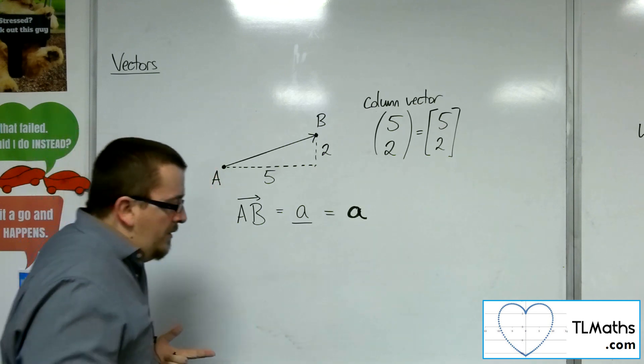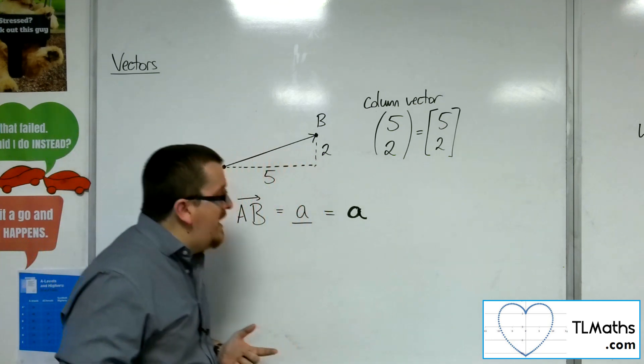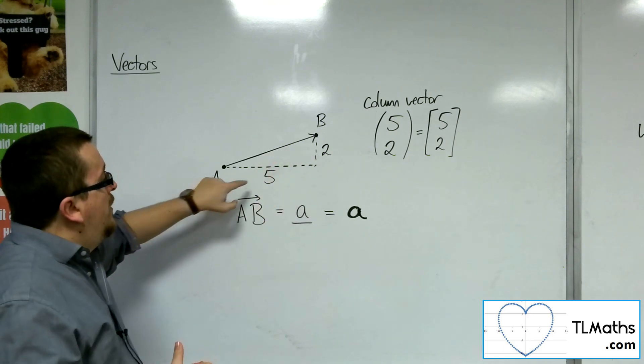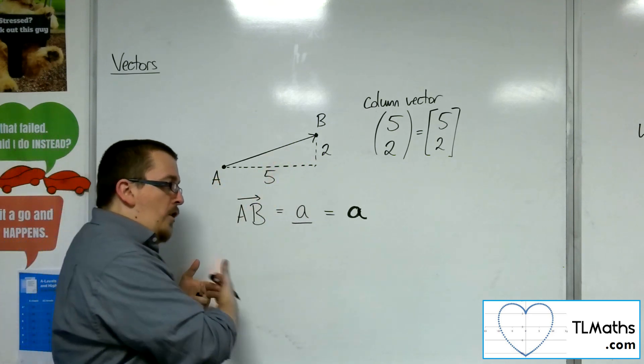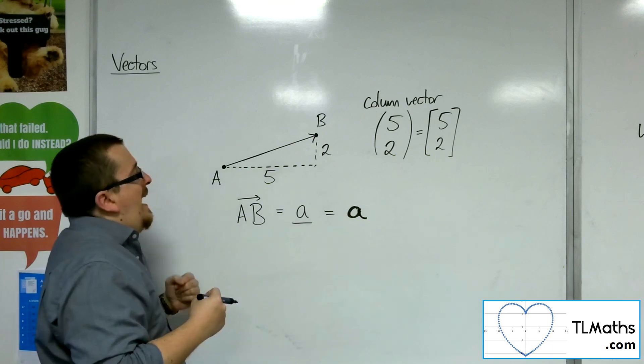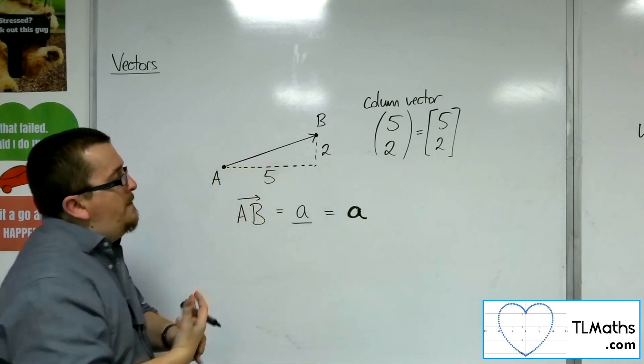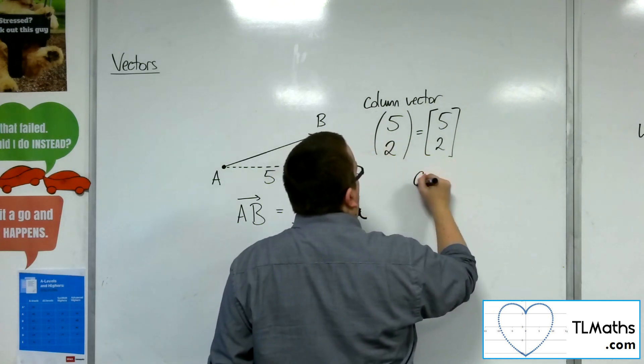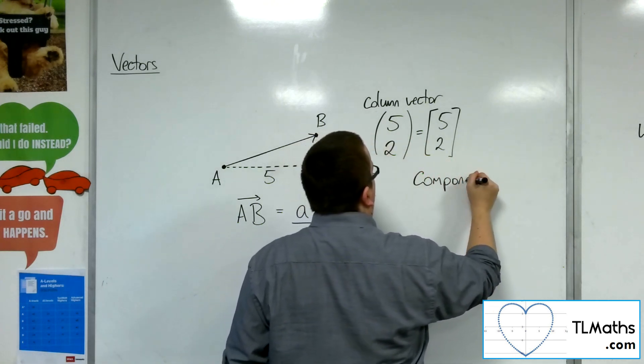Another way of writing it down is to describe it as kind of like what I've done here is describing it as 5 lots of going along to the right and 2 lots of going up. So the way that we do that is by writing it in what we refer to as component form.